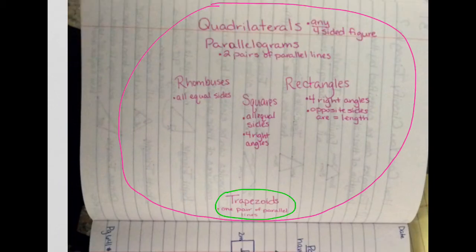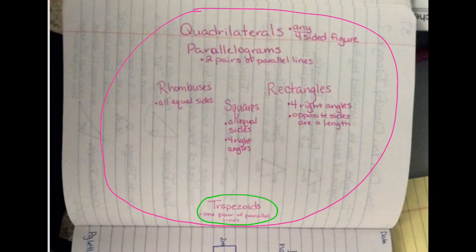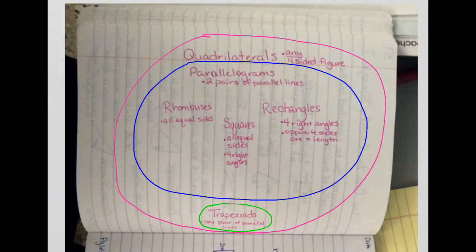Next, inside that first big circle, you're going to put a little circle around trapezoids. Then you're going to put another circle around parallelograms, rhombuses, squares, and rectangles.